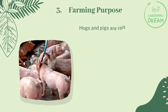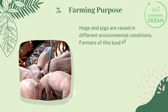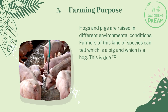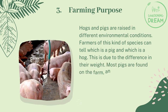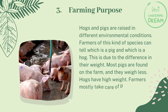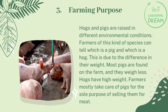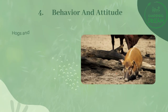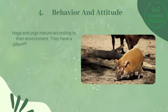Hogs and pigs are raised in different environmental conditions. Farmers can tell which is a pig and which is a hog due to the difference in their weight. Most pigs are found on the farm and weigh less, while hogs have higher weight. Farmers mostly take care of pigs for the sole purpose of selling them for meat once they mature.